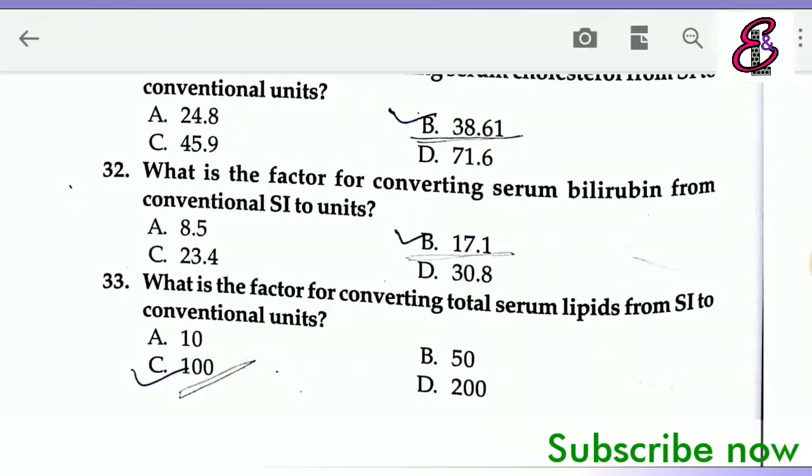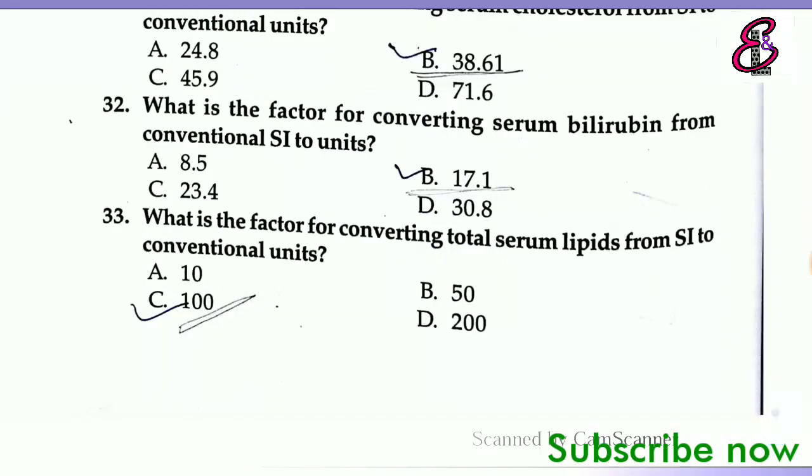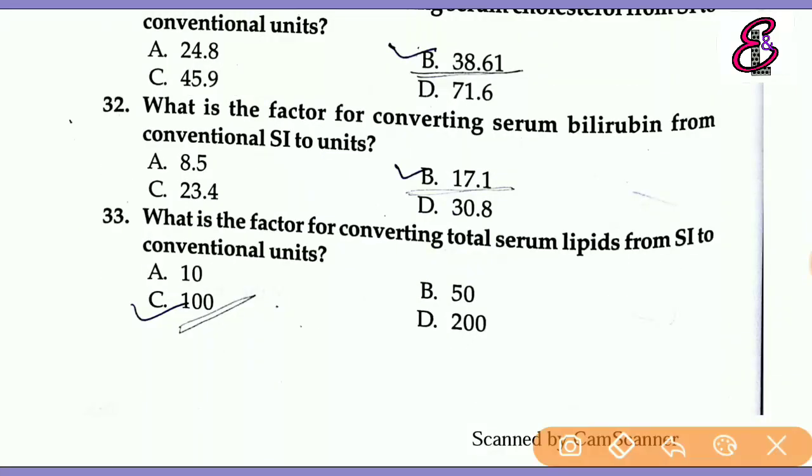Next question: What is the factor for converting serum bilirubin from conventional to SI units? Answer is 17.1.